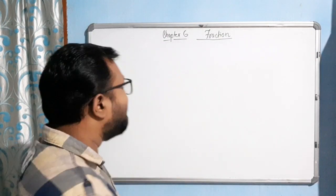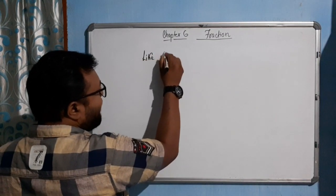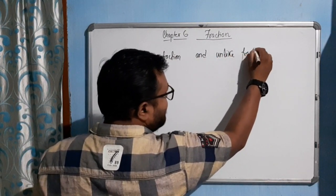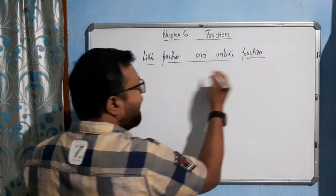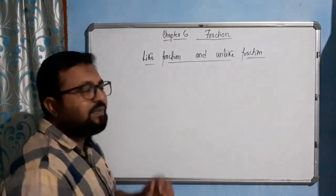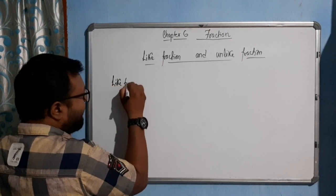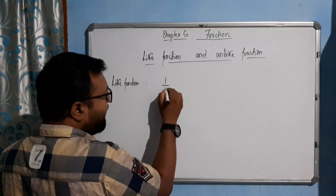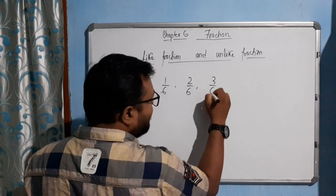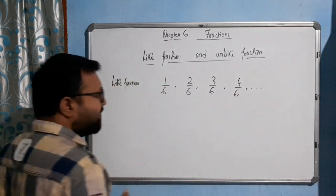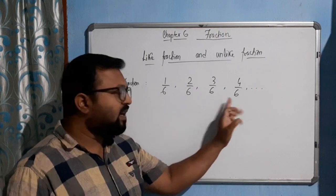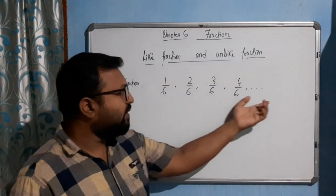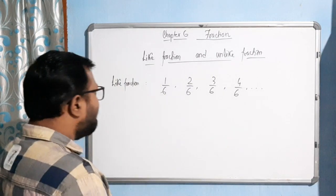Welcome students. Our next topic is about like fractions and unlike fractions, and we will talk about how to do addition and subtraction of like and unlike fractions. A like fraction is very simple — for example, 1/6, 2/6, 3/6, 4/6. In these fractions, all the denominators are the same. This type of fraction is known as a like fraction.